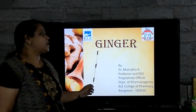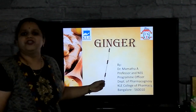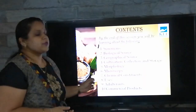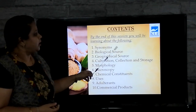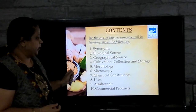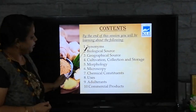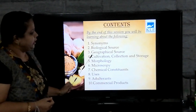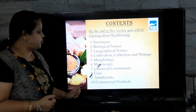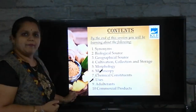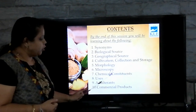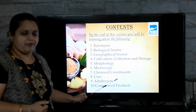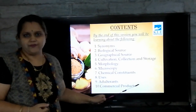Ginger is one of the secondary metabolites which belongs to resins. By the end of this session, you will be learning about the following: synonyms of ginger, its biological source, geographical source, cultivation, collection and storage of ginger, morphology, microscopy, chemical constituents of ginger, its uses, substitute and adulterants, and commercial products of ginger.